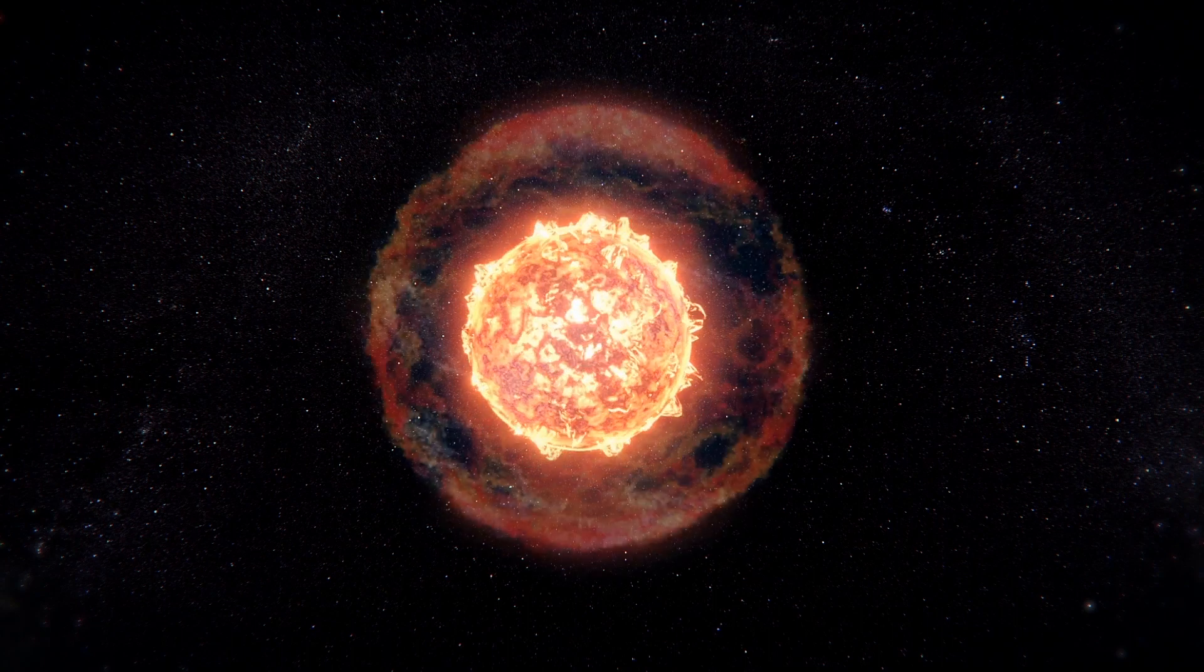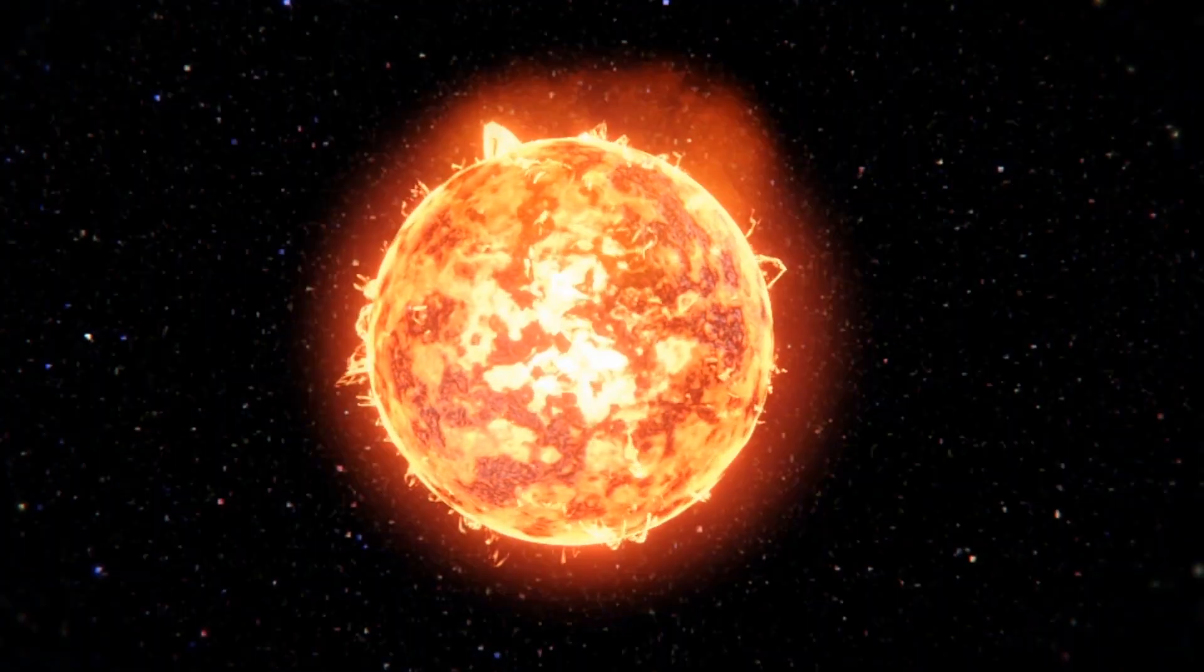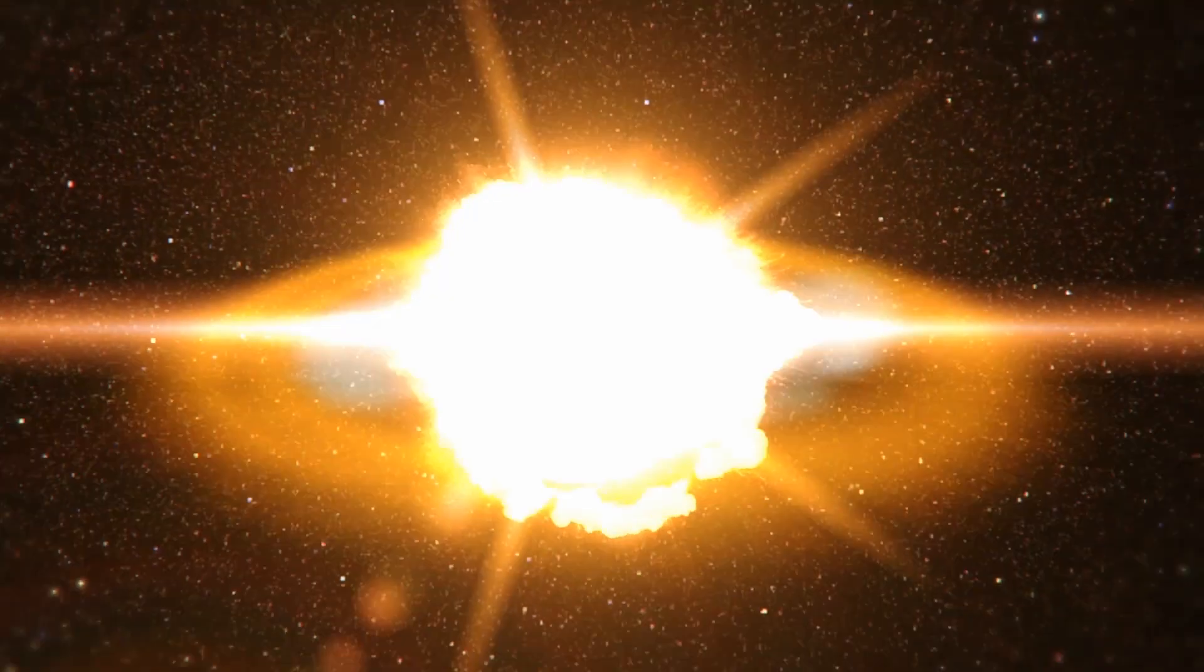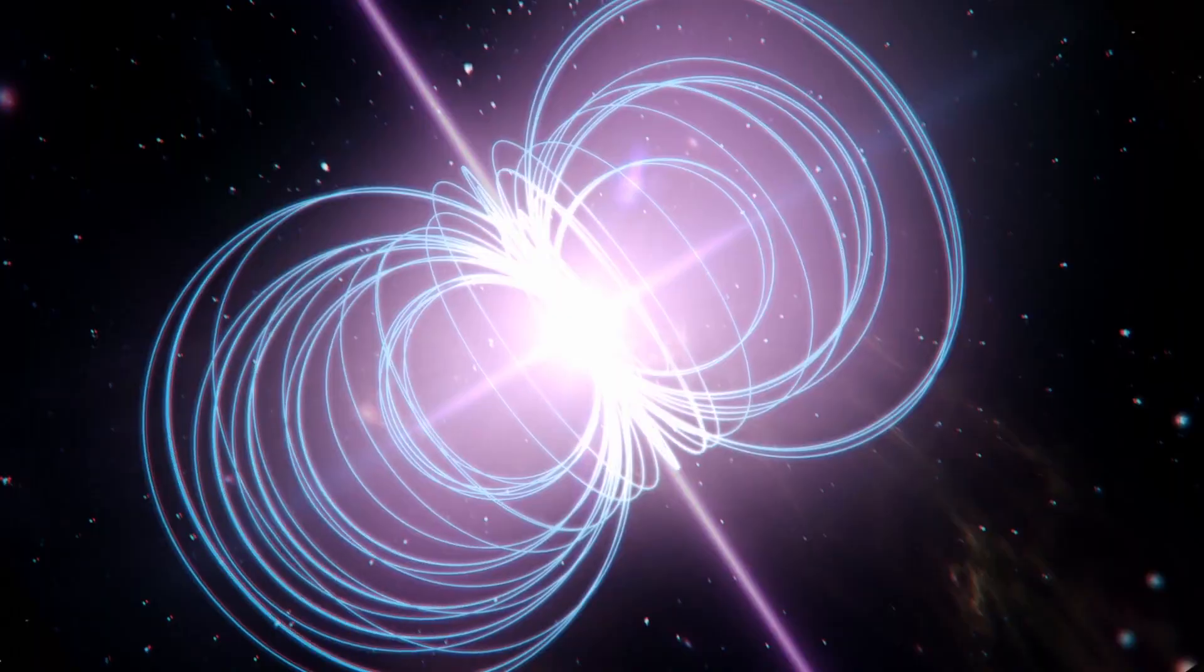A magnetar is described in the Annual Review of Astronomy and Astrophysics as a kind of highly magnetized neutron star, the compressed core of a star that exploded in a supernova and collapsed in on itself.